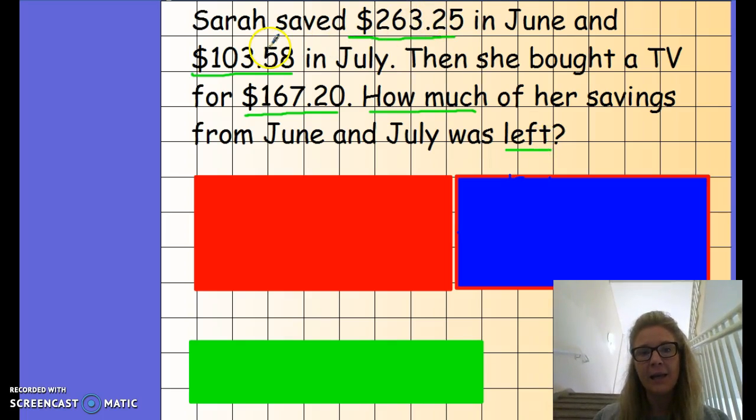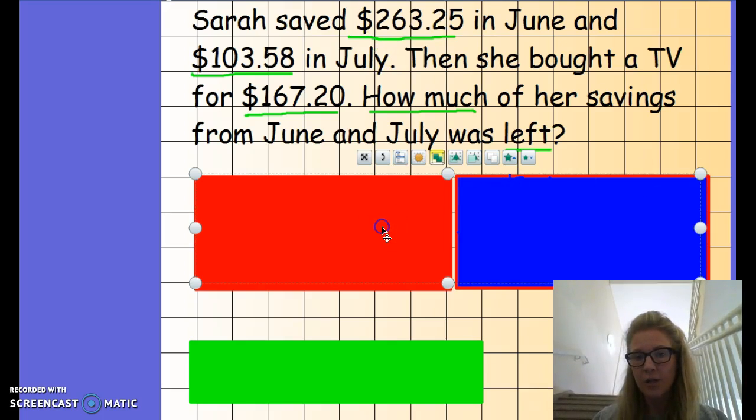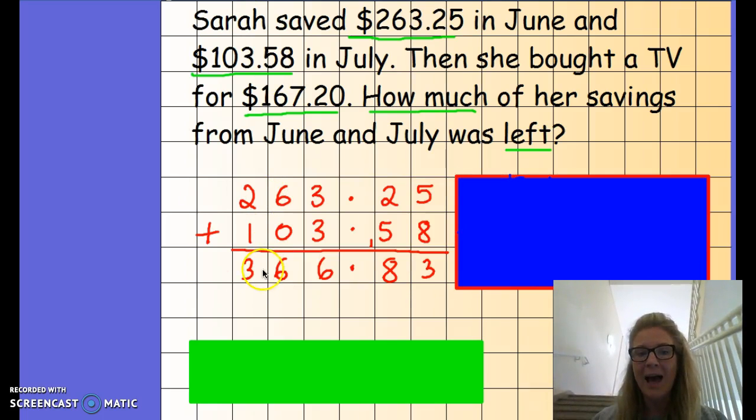So we can see here clearly that there are two parts to this problem. And you will find this in the questions in your homework. So the first part of the problem that we will solve is we will add together the two amounts that Sarah has saved from June and July.